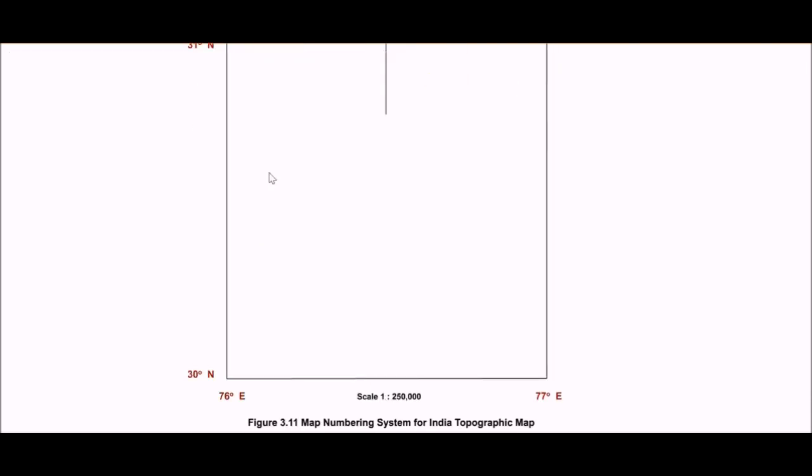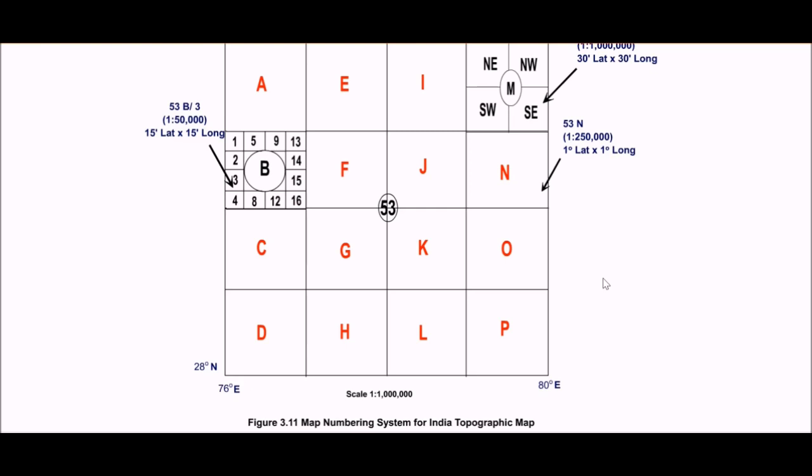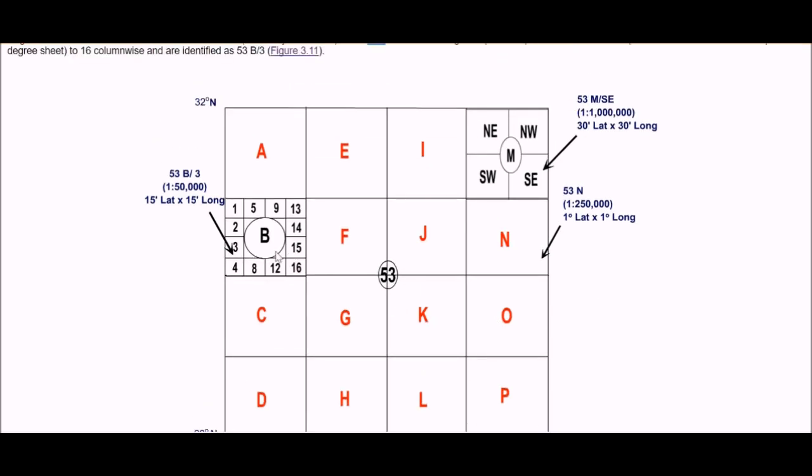So this is what we are talking about. Let us click and see. These are again 16 more partitions, so we can come up to 1 is to 50,000. This was 30 minutes, this is 15 minute by 15 minute and 1 is to 50,000. If this is 53B and you are at this position, we can say 53B by 3.